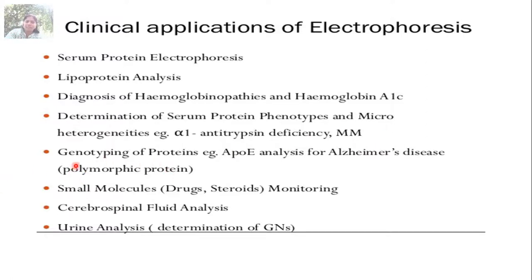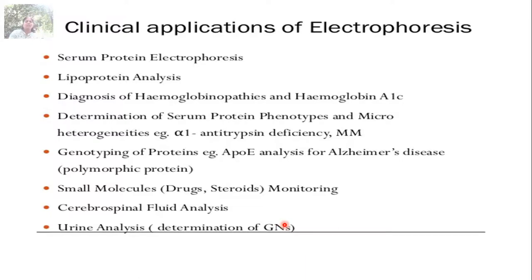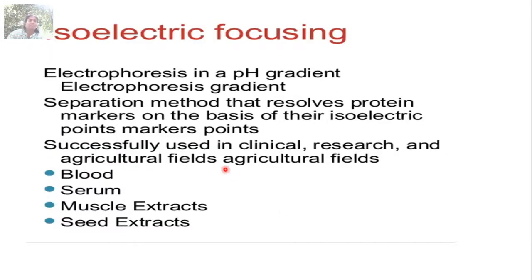Electrophoresis is also used for genotyping of proteins, analysis of small molecules such as drugs and steroids, monitoring of various compounds, analysis of cerebrospinal fluid in cases of certain disorders, and urine analysis.